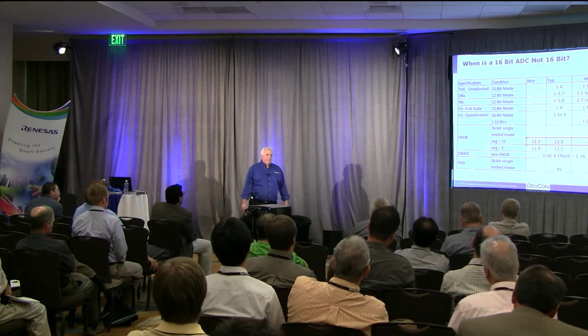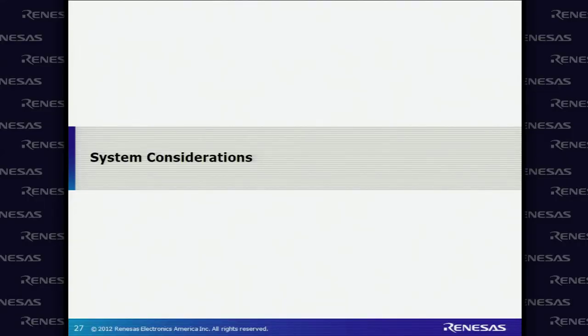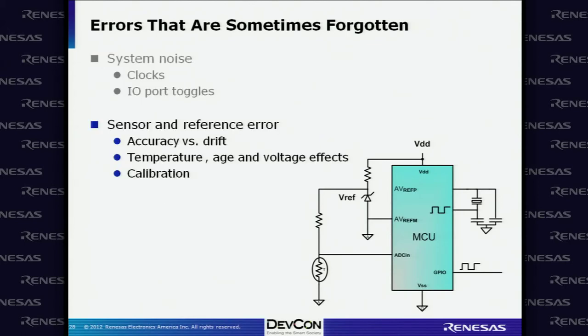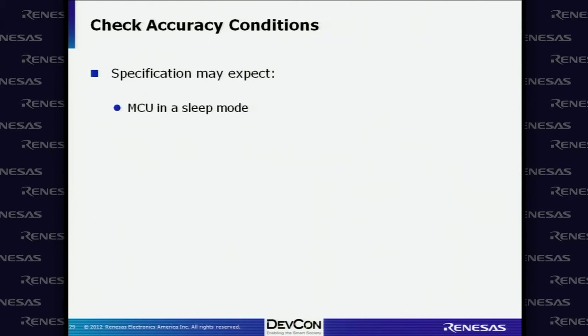Every one of these specs is like this, and they're becoming more complex. With 10-bit and 8-bit A-to-Ds, there was so much slop it didn't matter. But now at 12 and 14 bits, clock noise is becoming significant. Some areas that are sometimes forgotten: clock noises and I/O port toggles will get into your A-to-D; sensor accuracy and drift; input system effects. The specification may expect sleep mode, no I/O toggling, and the ADC running at a special clock mode — check for them.